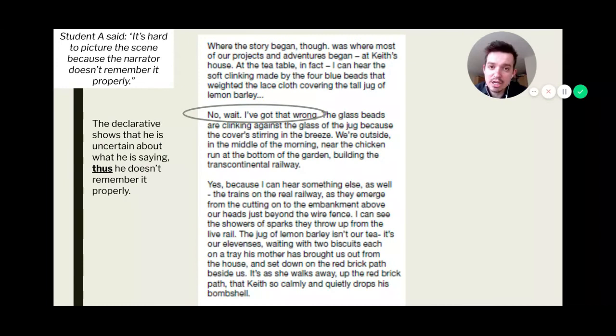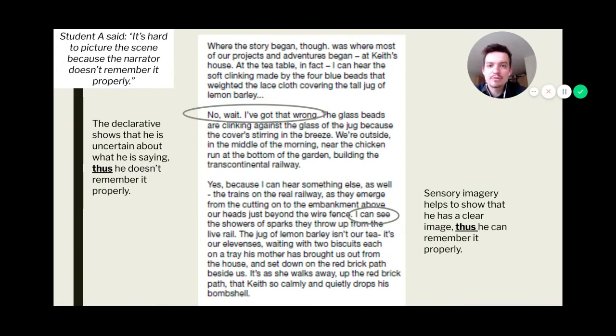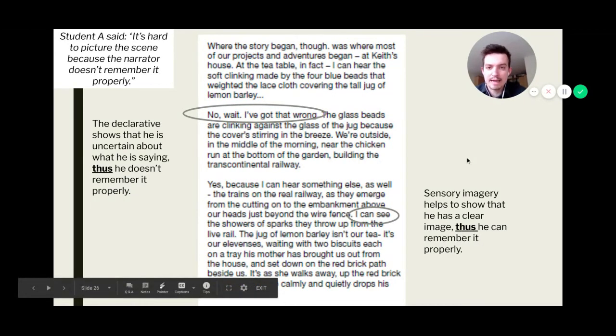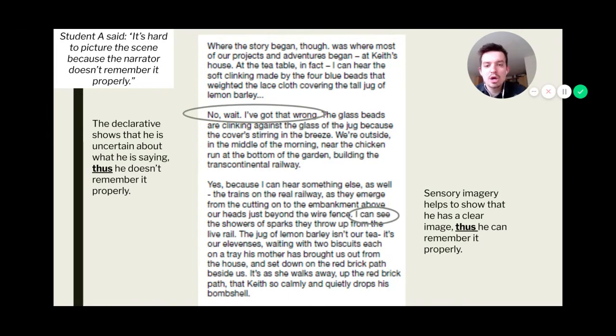I'm going to highlight one more particular example on this three paragraphs. I suggest you pause the video now. See if you can do what I've just done here. Highlight a phrase, pick out the language technique, give the effect, and then talk to me thus how it links back to the statement. So one more example you might be able to find. I can see the showers of sparks they throw up. Now I can see. You could talk about that. Some people might argue that's another declarative. Absolutely. You could also argue that this is sensory imagery. Sensory imagery is when you use the senses. So you talk about sight, sound, touch, taste, or smell. Sensory imagery helps to show that he has a clear image. Thus, he can remember it properly. We've identified the technique. We've said the effect. We've said thus and linked it back to the statement. A very clear and concise way to make sure we've got some quotations for this.